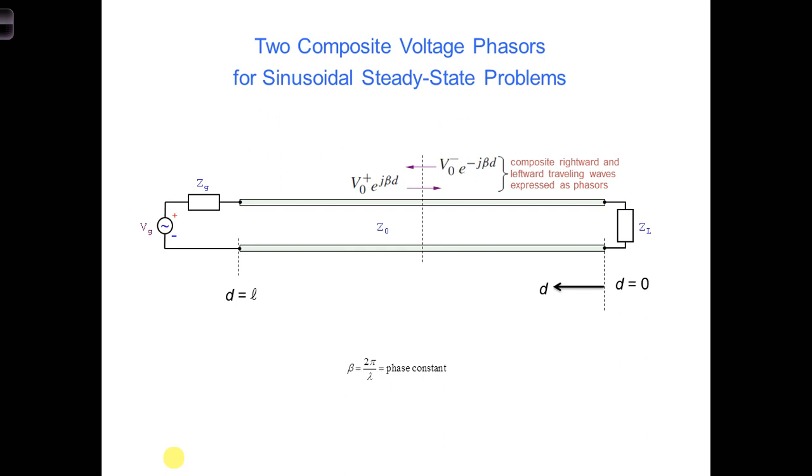As a result, in general, we will have both positive and negative traveling waves on the transmission line, as shown here. For steady state problems, there are two voltage phasors.